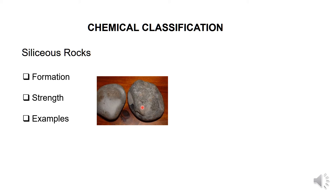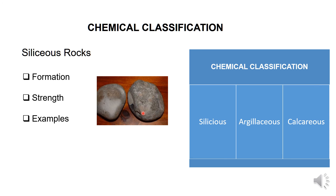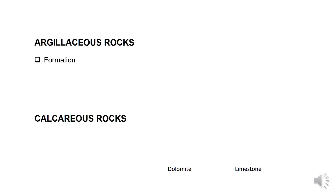Siliceous rocks appear in this way. The chemical classification includes siliceous rocks, argillaceous rocks, and calcareous rocks. Now let's see about argillaceous rocks. Argillaceous rocks are formed with alumina as the principal constituent. They contain clay, belonging to the clay group. These argillaceous rocks are less durable as they are made of clay.